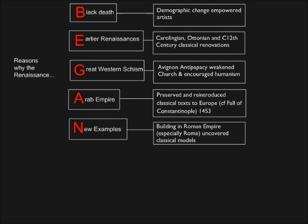This graphic represents with the mnemonic BEGAN the causes of the Renaissance. B, the Black Death, killed between a quarter and a third of the population of Europe, and the resulting limited supply of, and hence increased demand for, surviving craftsmen allowed them to organize themselves into guilds to represent their newfound prestige and independence. The session on medieval art looked at E, which stands for the earlier Carolingian, Ottonian and 12th century renaissances.